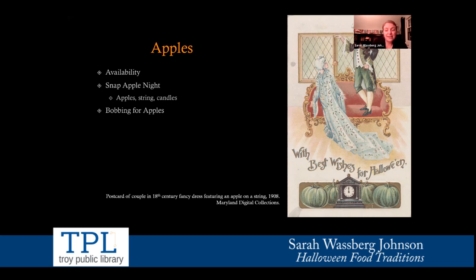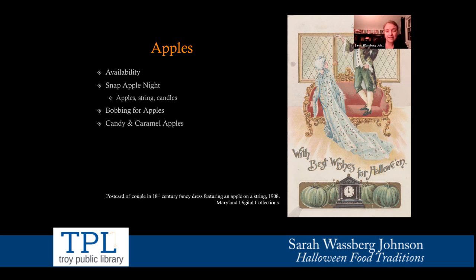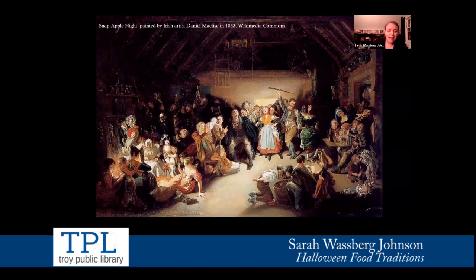In bobbing for apples you float apples in a large container of water and try to get them with your mouth — some people bite the stem, some create suction, some shove their whole head in to trap the apple between their mouth and the bottom of the tub. It's a way for young people to show off and to get close to each other. We also have candy and caramel apples — caramel apples come later in the late 19th to early 20th century, while candied apples are more common earlier.